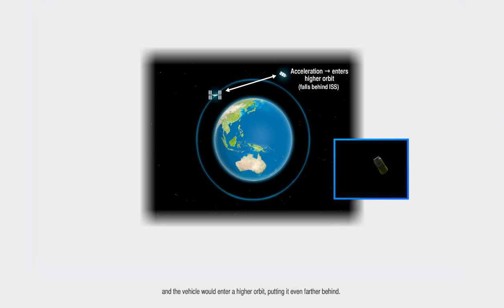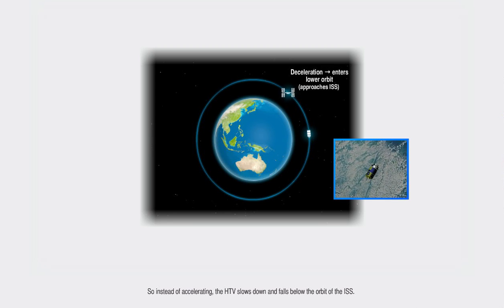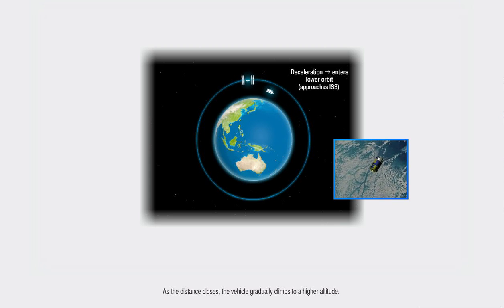So instead of accelerating, the HTV slows down and falls below the orbit of the ISS. As the distance closes, the vehicle gradually climbs to a higher altitude.